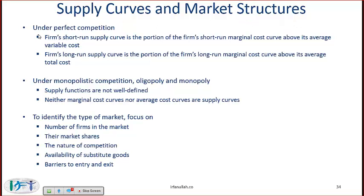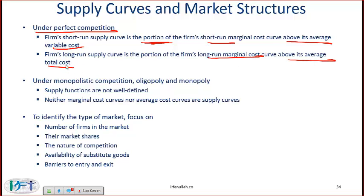Regarding supply curves and market structures: under perfect competition, a firm's short-run supply curve is the portion of the firm's short-run marginal cost curve above its average total cost. In the long run, if cost is below average total cost the firm should shut down. Under monopolistic competition, oligopoly, and monopoly, supply functions are not well defined — neither the marginal cost curves nor average cost curves serve as supply curves. In perfect competition, the marginal cost curve is the supply curve above the average variable cost.